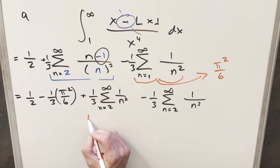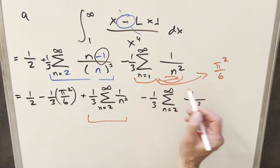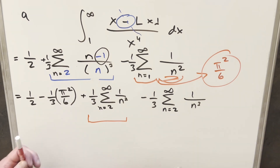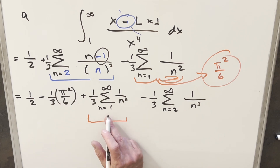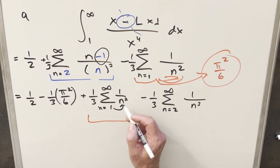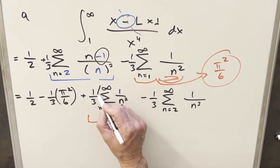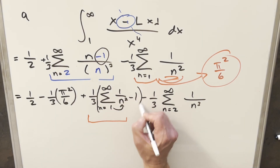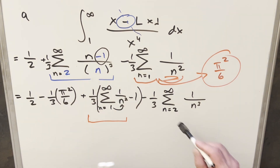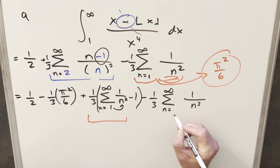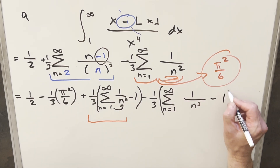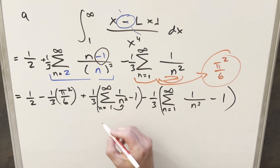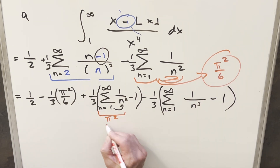This first sum is really close to the Basel problem result. I can force the index back to one by adding the n equals one term — plugging one into one over n squared gives one — so I've added one, and I'll just subtract it back off. I do the exact same thing for the second sum: force the index to one, plug in one over one cubed which is one, then subtract it off. Now this sum is exactly the Basel problem, so its value is pi squared over six.